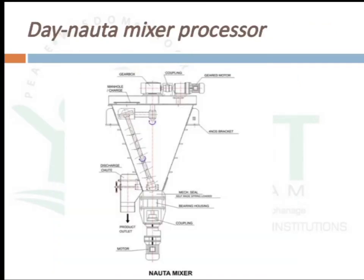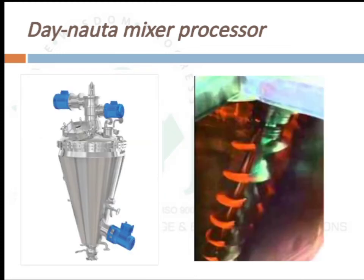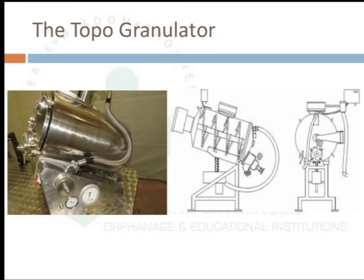The Denu 2 mixer has a mixer that rotates in two ways — it rotates itself and the axle also rotates across the entire surface. The topo granulator has a mixer with movement for mixing as well as size reduction of granules.